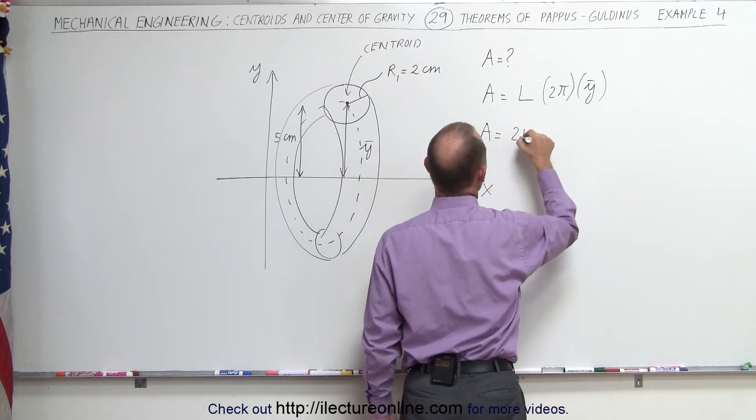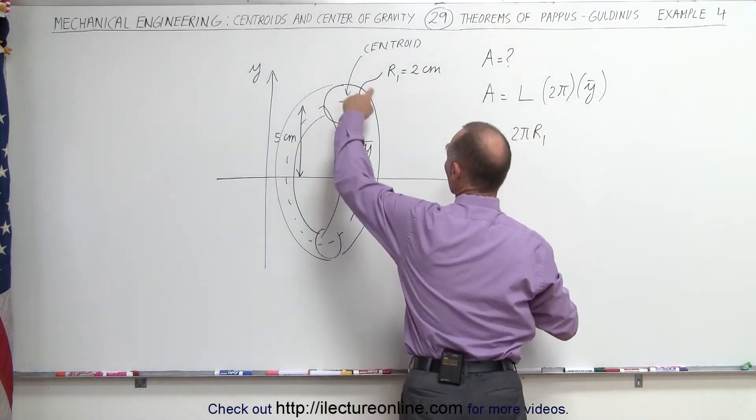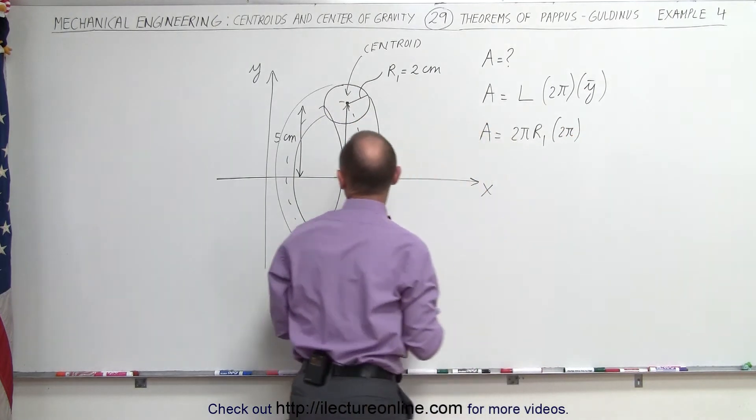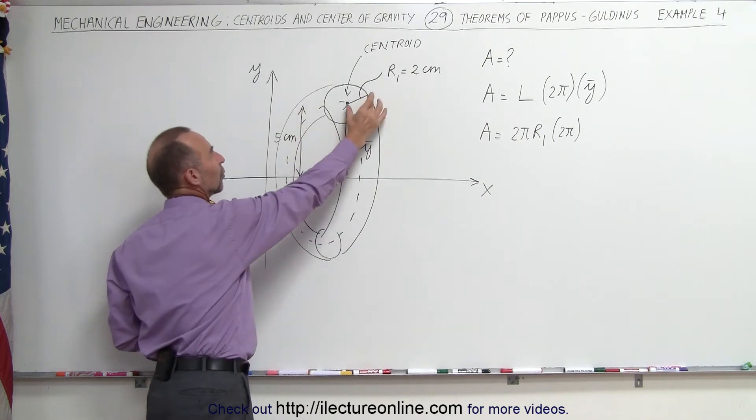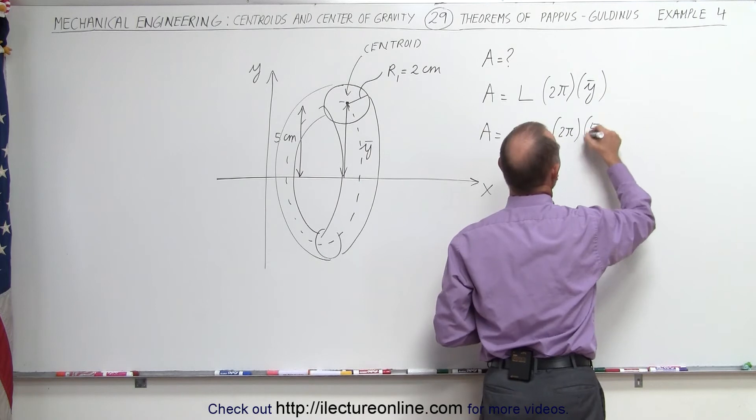A therefore equals 2π times R1, that would be the length of the curve, times 2π times the y-coordinate. In this case, the y-coordinate is equal to 5 centimeters. The radius of the circle is 2 centimeters. So y is 5 centimeters.